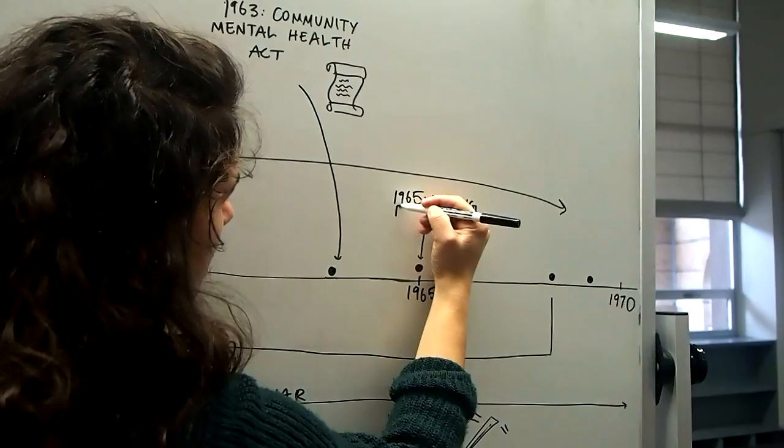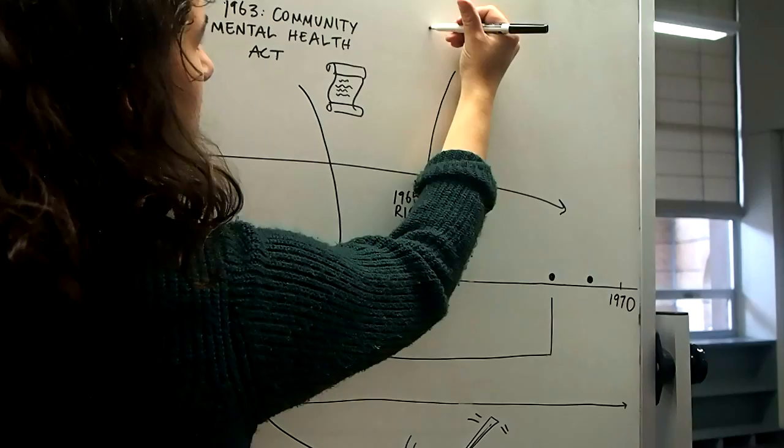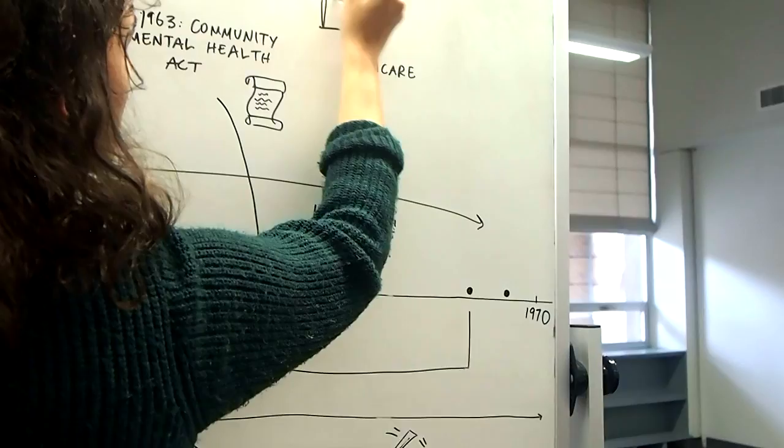In 1965, the Civil Rights Movement culminated in the passing of the Voting Rights Act. This year also saw the creation of Medicare, which provided health insurance to Americans over 65, regardless of income or disability.